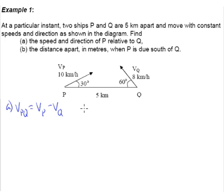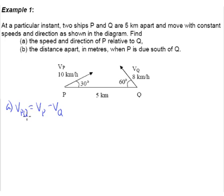We can do simple subtraction when talking about parallel motion, but in this case we can't because they're not parallel anymore. What you must understand is that Vp is a vector and Vq is also a vector. And VPQ, which is vector Vp minus vector Vq, is also a vector. So the first thing we must do is to draw the vector diagram, or some call it the velocity diagram.